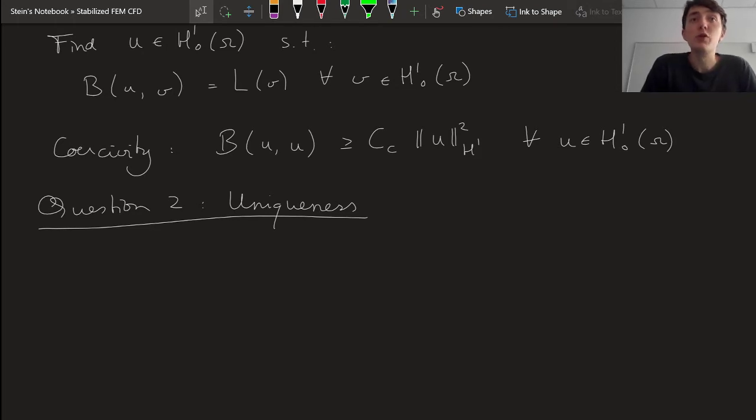Now, this one I'll actually prove because it's relatively straightforward. So what we're going to do is we're actually going to assume that it's not true, it's not unique, so we have two different solutions that satisfy the above relation.